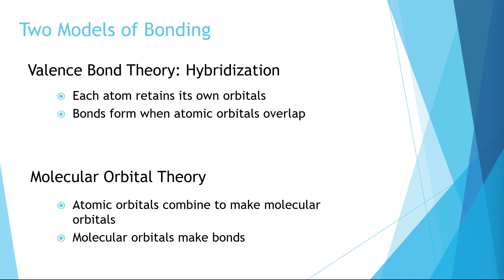So in valence bond theory, when we get there, we'll see that molecules retain their own orbitals and then form bonds by overlapping these orbitals. We'll talk a lot more about this in later videos. In MO theory, we'll be using quantum mechanics to combine atomic orbitals into new molecular orbitals that create the bonds.